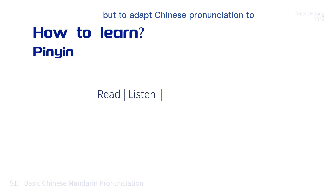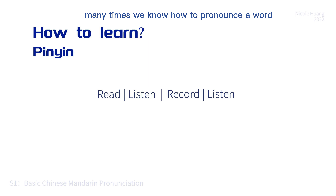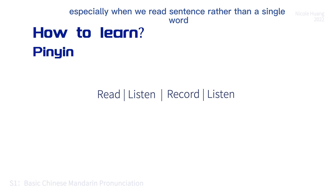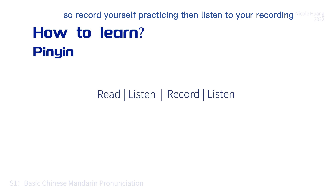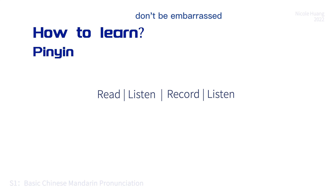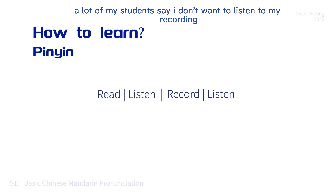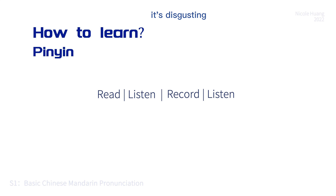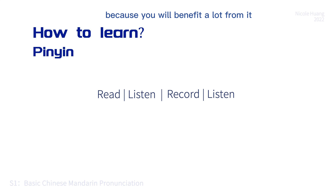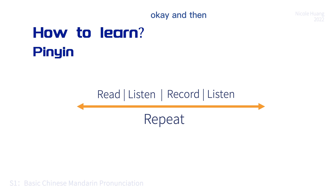Next, record yourself many times. We may know how to pronounce a word, but when we actually pronounce it, especially in a sentence rather than a single word, we make the wrong sound. So record yourself practicing, then listen to your recording — you will realize your own mistakes and problems. Don't be embarrassed; a lot of my students say they don't want to listen to their recording because it sounds awful, but trust me, if you put up with it once or twice, you will love it because you will benefit a lot from it. Then repeat all of the process.